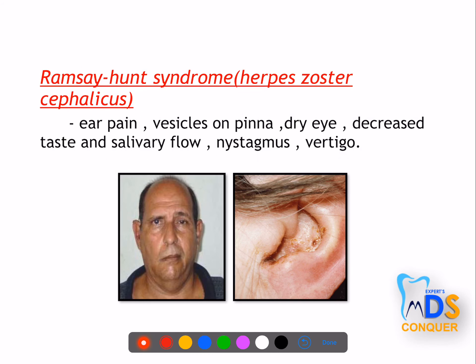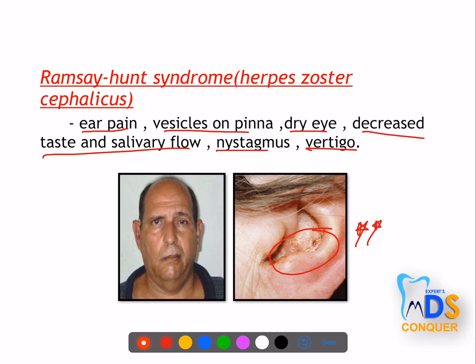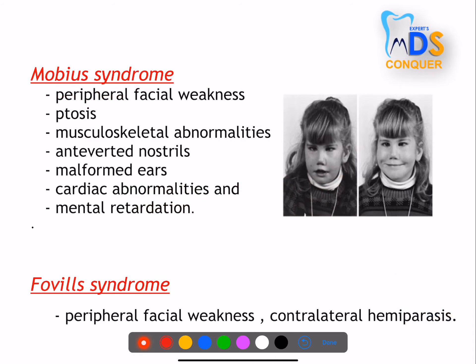The important associated syndrome is Ramsay Hunt syndrome. The patient presents with ruptured vesicles, ear pain, vesicles on the pinna, dry eye, decreased taste, sensory changes, nystagmus, and vertigo. Apart from facial paralysis, it shows a herpes zoster infection with vesicles or bullae that have ruptured.